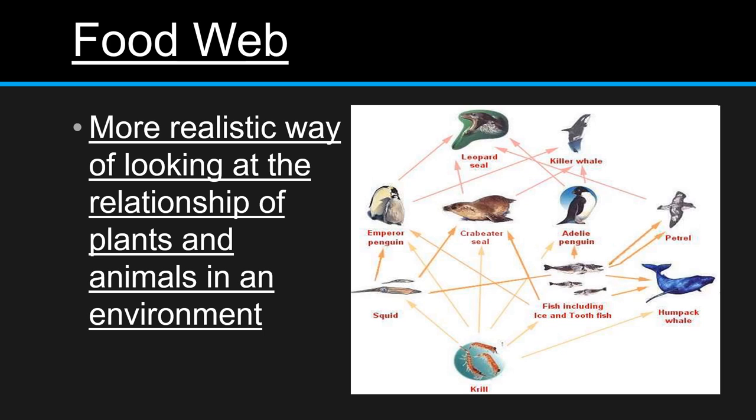Now food chains are very simple, but they're not realistic. That's the reason why we use food webs. They're a much more realistic way of looking at the relationships of plants and animals in an environment, because animals eat lots of different things and ecosystems are complex. And so this is a much more realistic way of looking at the relationships. It also shows that animals can occupy different levels in the same ecosystem. They may be a secondary consumer in one case and a tertiary consumer in another.